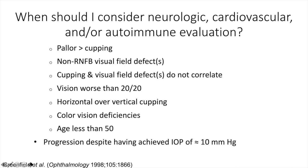When should we consider ordering neurologic, cardiovascular, or autoimmune tests? If pallor is greater than cupping, think of things other than glaucoma. If the visual field defect does not respect the horizontal midline as is typical with glaucoma, consider another optic neuropathy. Cupping and visual field defects that don't correlate with vision worse than 20/20 is not typical of early to mid-stage glaucoma. Horizontal over vertical cupping doesn't follow the ISNT rule. Color deficiencies are typically not related to glaucoma except in very end stages. Age less than 50 and progression despite pressure under 10 are also red flags — if the pressure is at 8 or 9 and the patient continues to worsen, imaging is warranted.